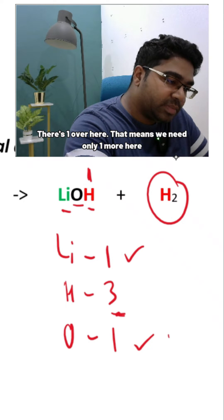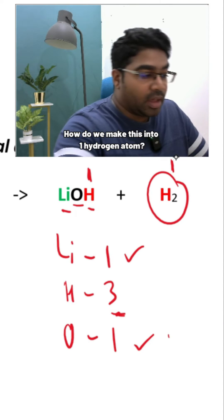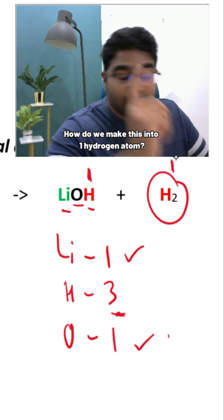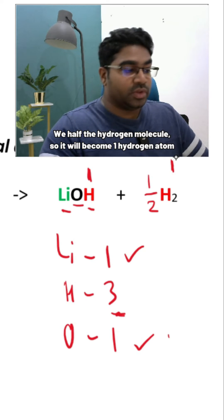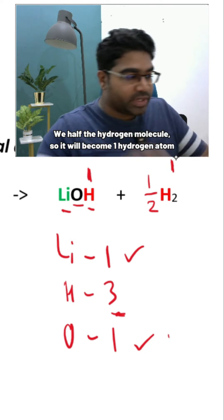There's one over here. That means we need only one more here. How do we make this into one hydrogen atom? We half the hydrogen molecule, so it will become one hydrogen atom.